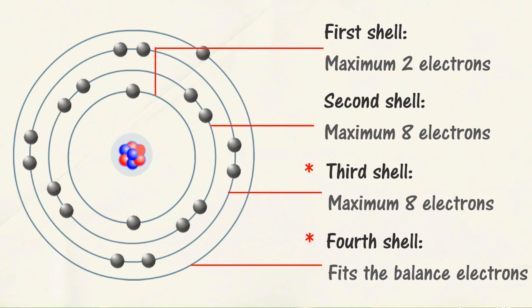For elements with proton numbers of more than 20, the third shell can hold 18 electrons, and the fourth shell can hold 32 electrons.